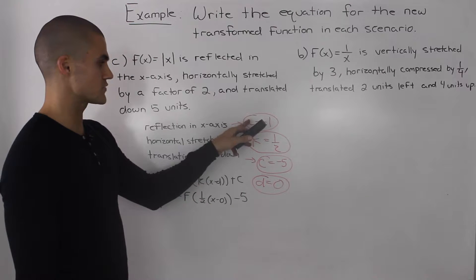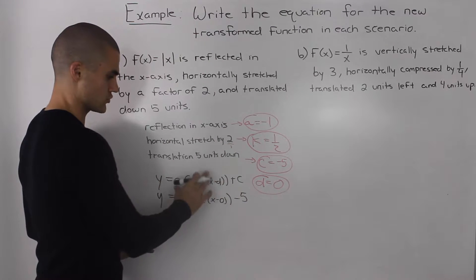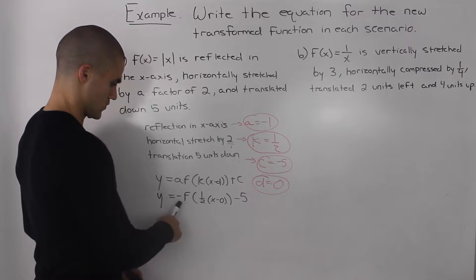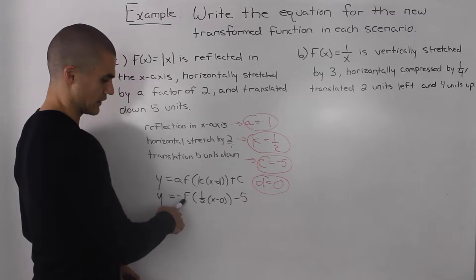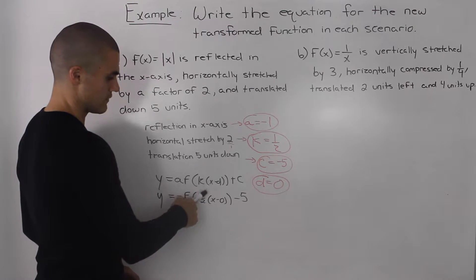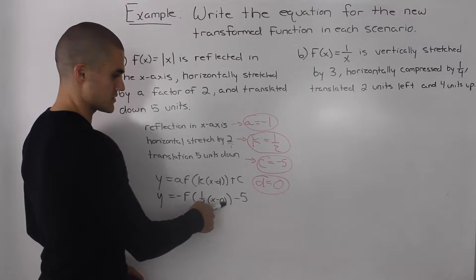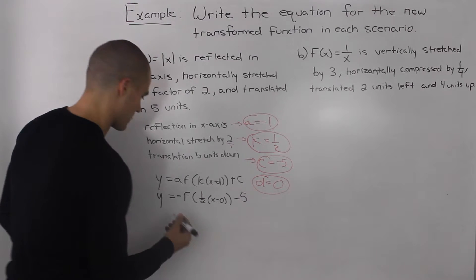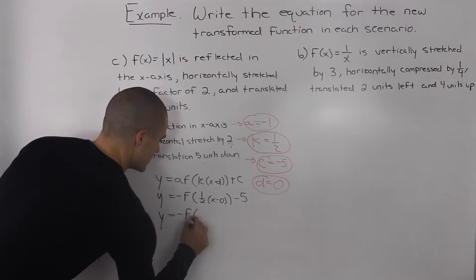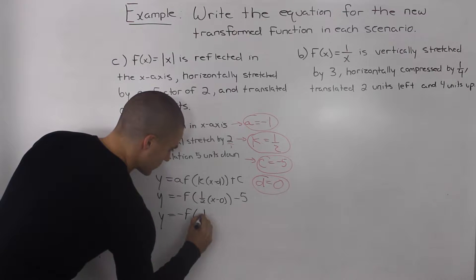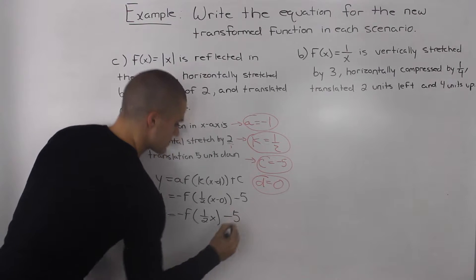Taking all of these values for a, k, c, and d and putting them in the general transformation format: the a value is negative 1, so I just put a negative in front of the f. The k value is 1 half, the d value is 0, and the c value is negative 5. Simplifying the bracket, we would end up with 1 half x minus 5.